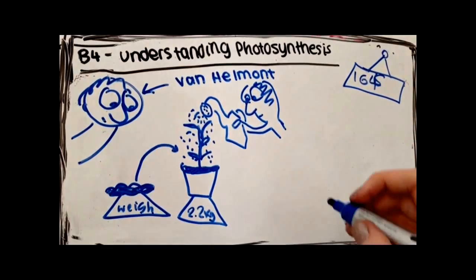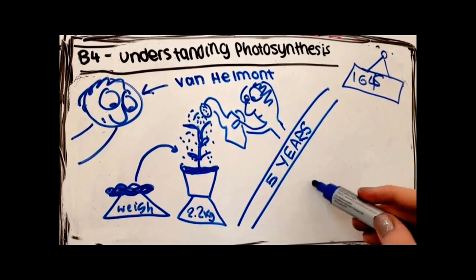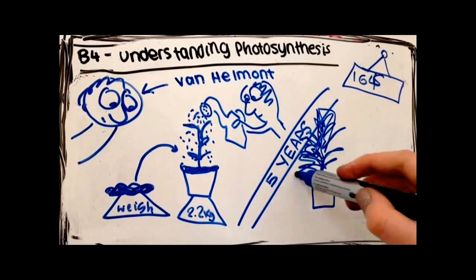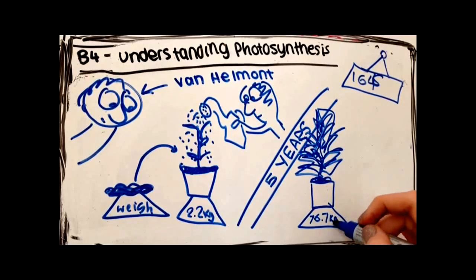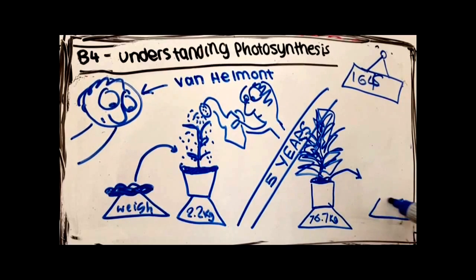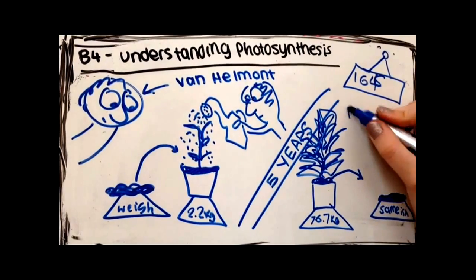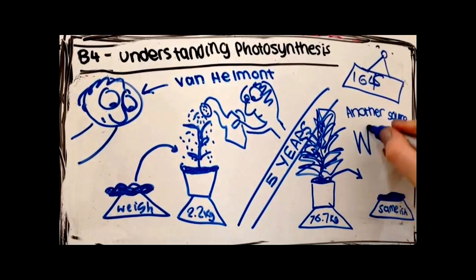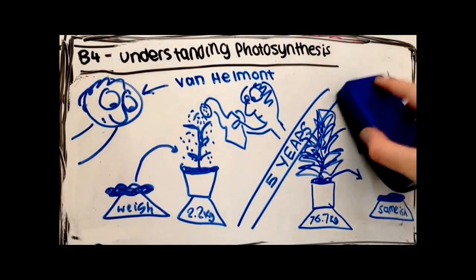Five years later, he removed the tree from the pot and weighed it. It weighed 76.7 kg and had gained a lot of mass. However, when he took out the soil and dried it and weighed it, its mass had changed very little. He then concluded that because the weight of the soil had changed so little, the tree must have gained mass from another source. Because he only added water to the tree, he concluded that the tree must have gained mass by taking in water.